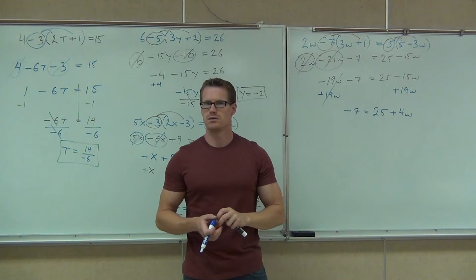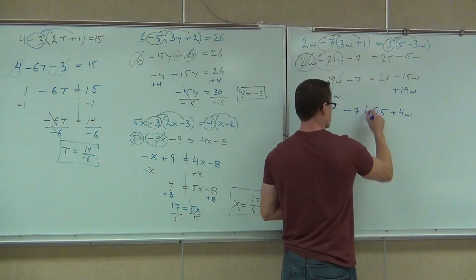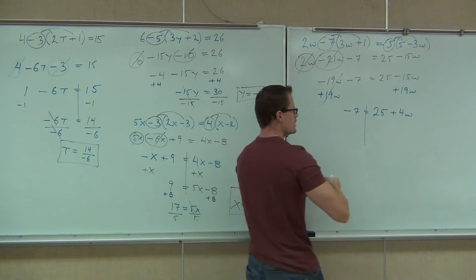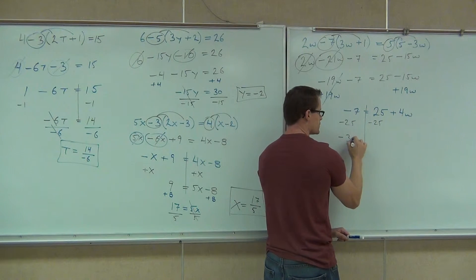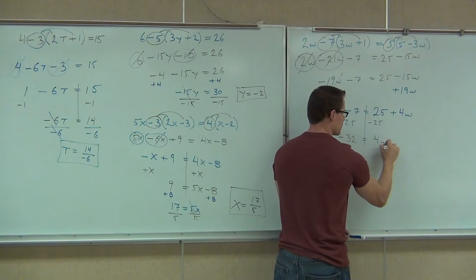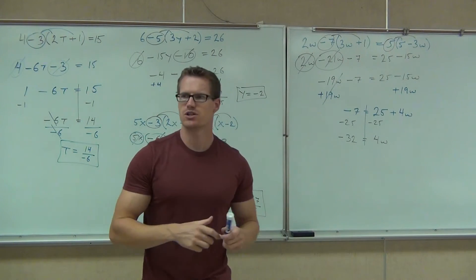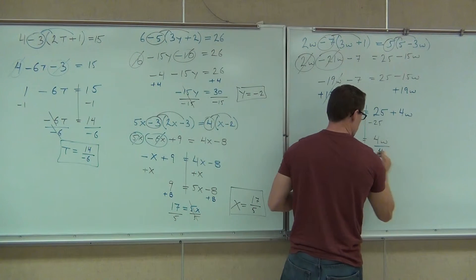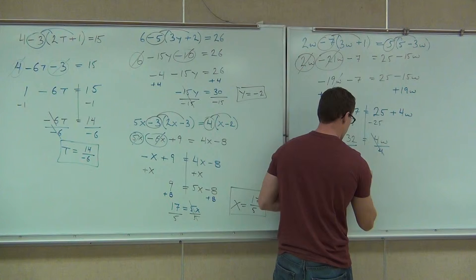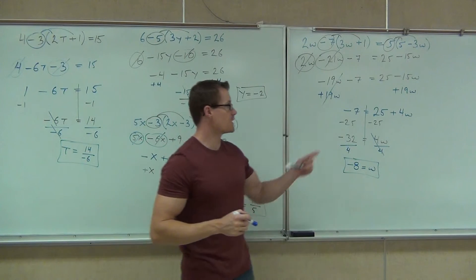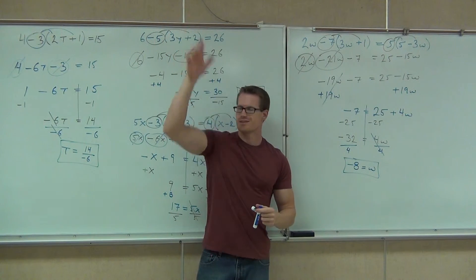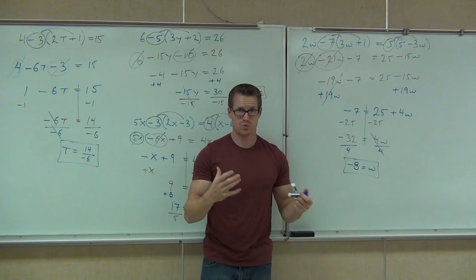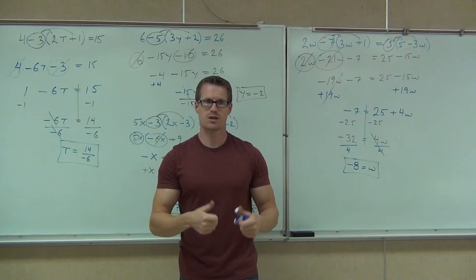Now we subtract 25. On the left-hand side we get negative 32, on the right-hand side we get 4w. Our last step is to divide both sides by 4, giving us negative 8. If you got the same answer doing it the other way, great — if not, you messed up the sign somewhere. How many of you feel pretty good about these examples?